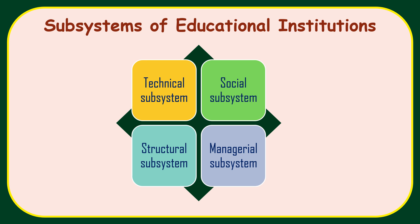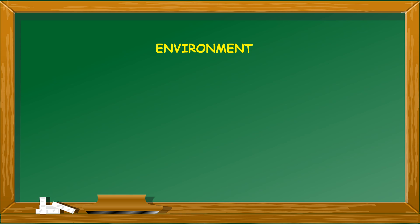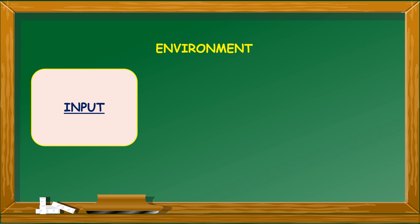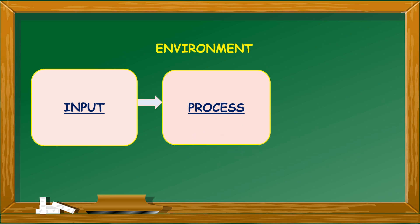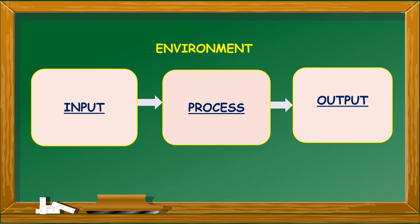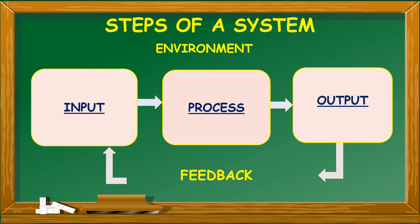So these are the four important subsystems of educational institution — technical subsystem, social subsystem, structural subsystem and managerial subsystem. Now, let us understand ki har ek system mein ek environment hota hai. There is always an environment jahan pe system work karta hai. So there is input, input ko processing kiya jaata hai — that is process hota hai — and final output nikalta hai. And also ek important cheez hai that is called feedback. Toh feedback mechanism bhi har ek system mein hota hai.